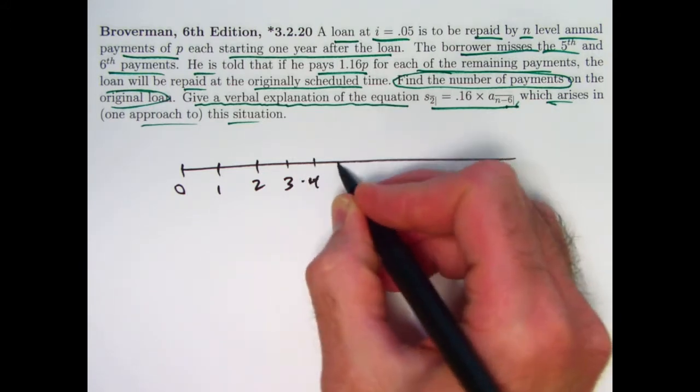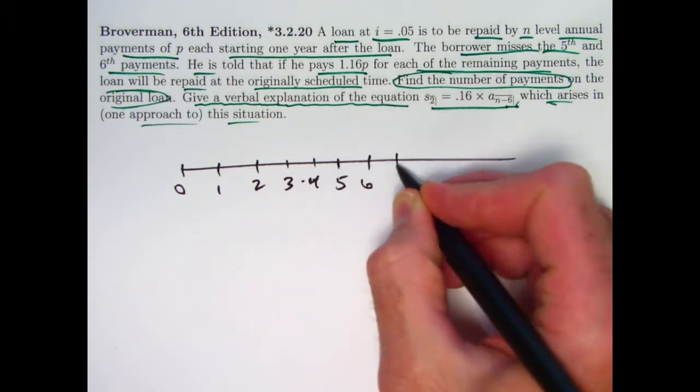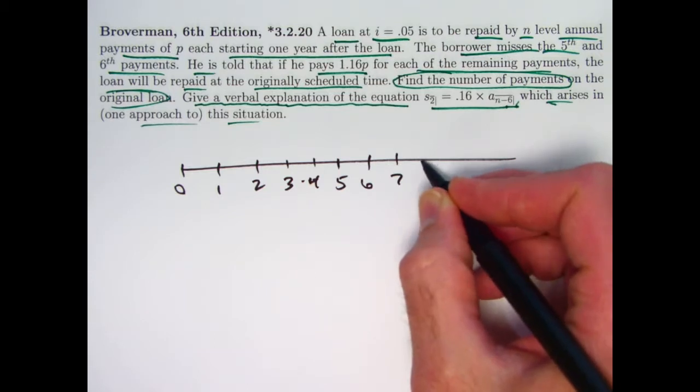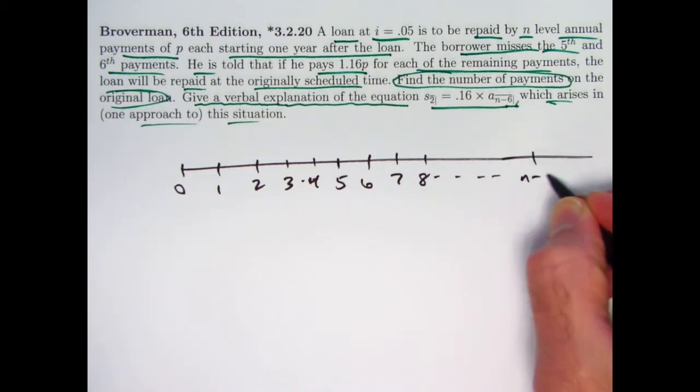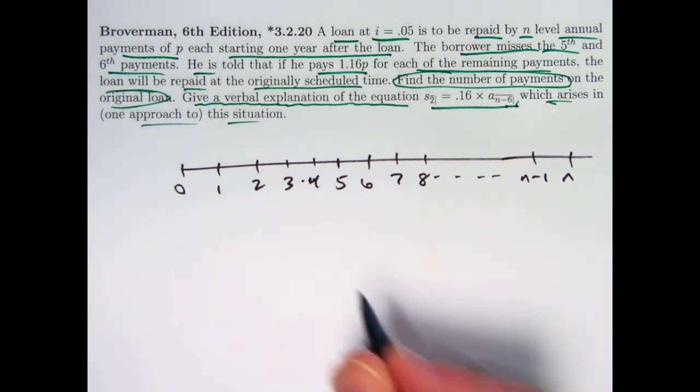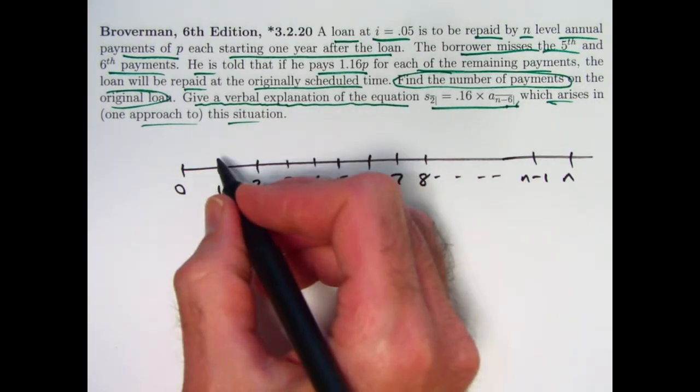Well, actually let me include 4, 5, 6, and 7 here in my timeline. So P is the payment amount originally.